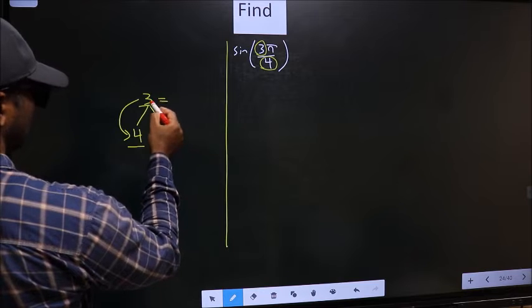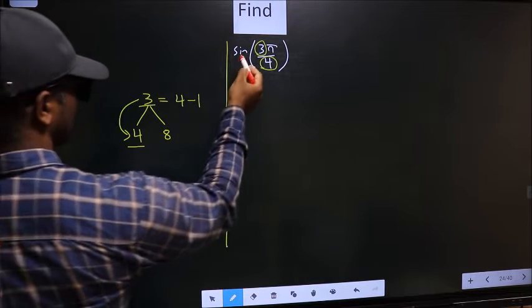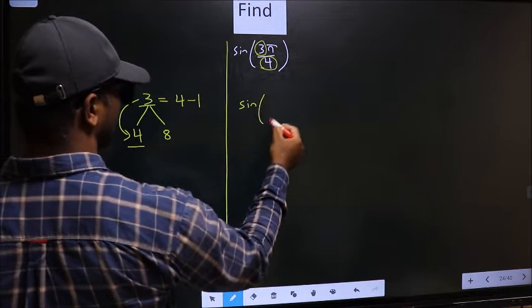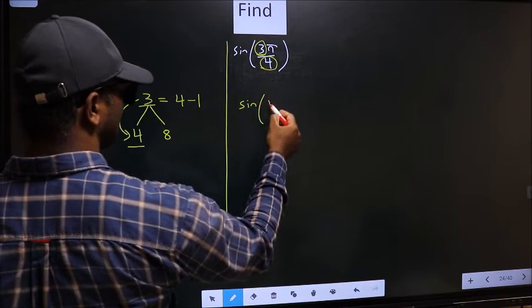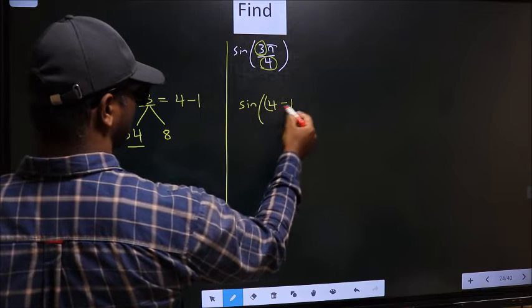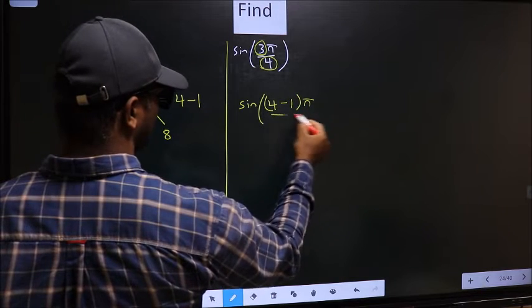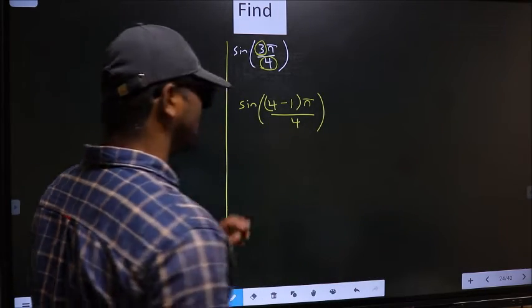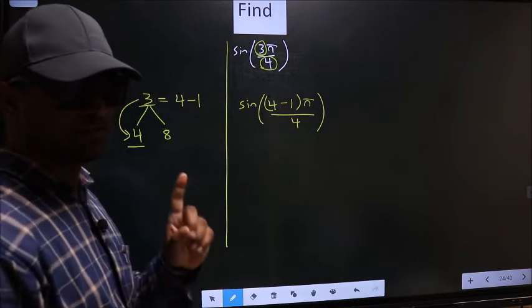So now 3 should be written as 4-1. So this will change to sin, in place of 3. Now you should write (4-1)π/4. This is your step 1.